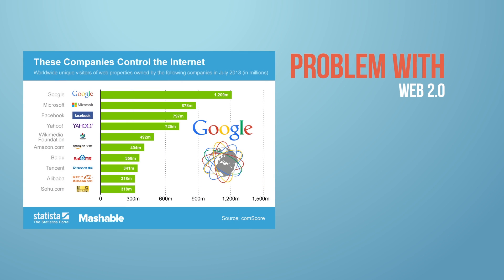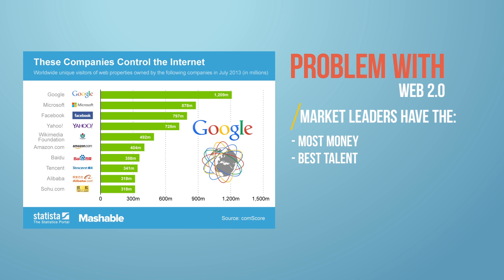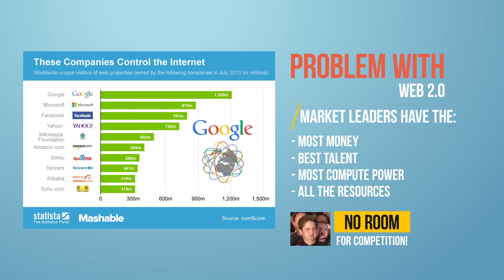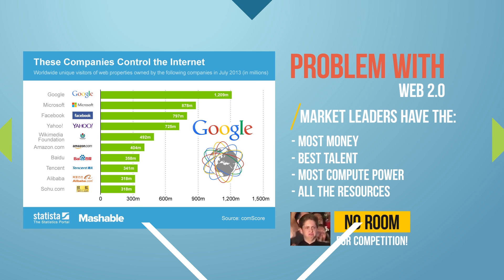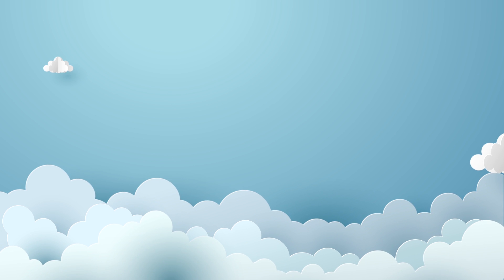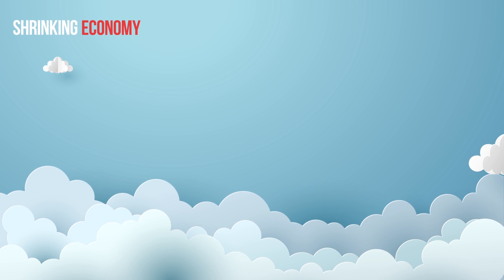If you look at the majority of the major companies in the web 2.0 space, there's no room for competition. These major companies have the most money, the best talent, the most compute — they have all the resources. How are we able to start up a new company today? The answer is web 3.0 decentralized applications.